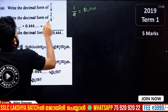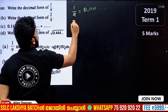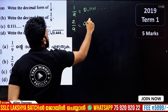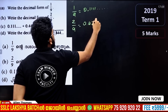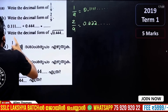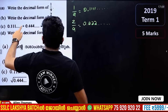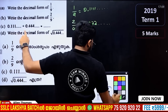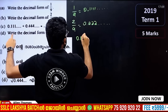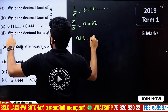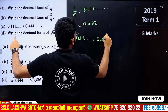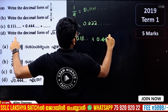Write the decimal form of 2 by 9. 2 by 9 is equal to 0.2222...